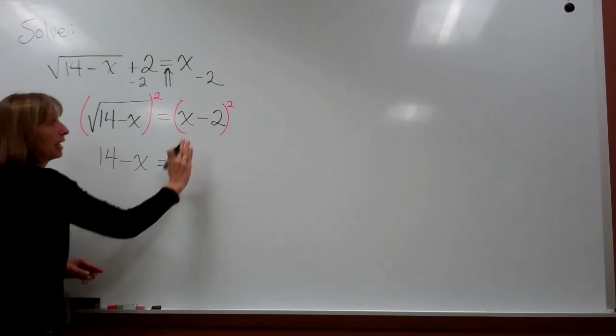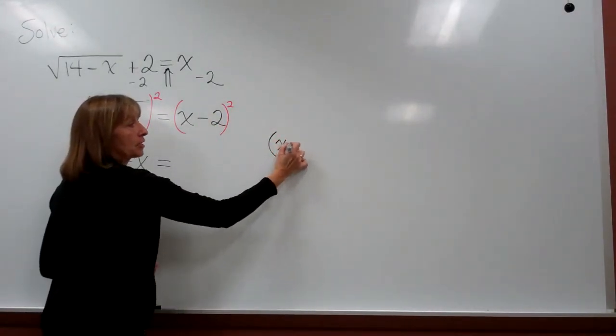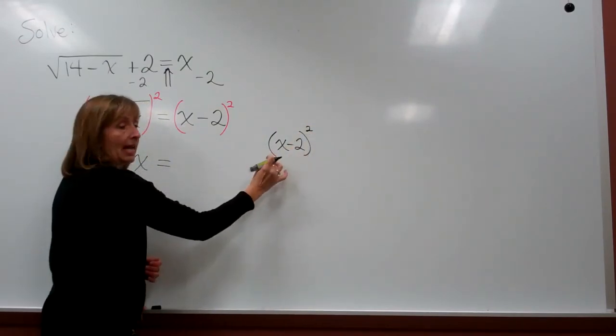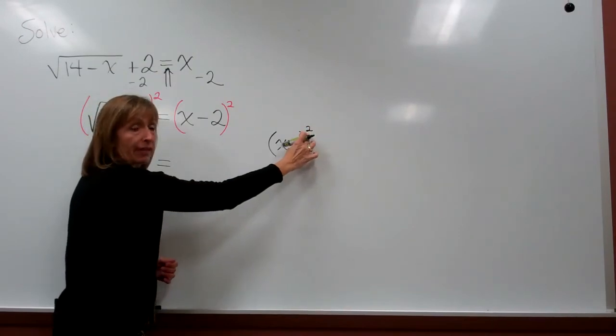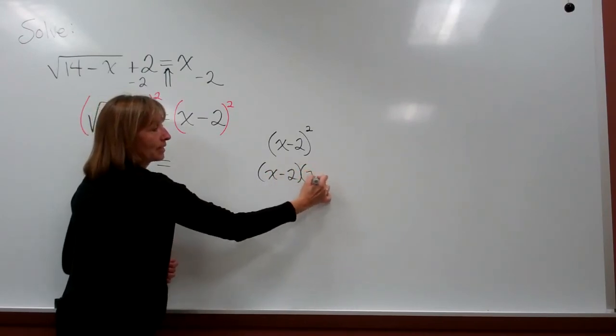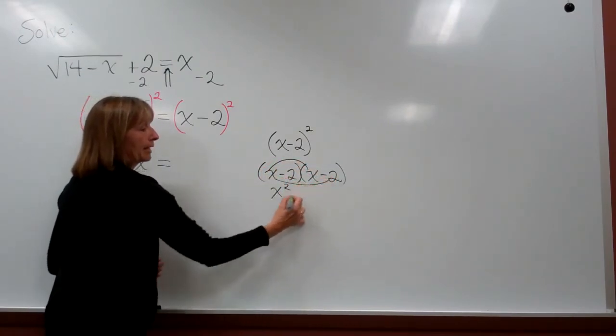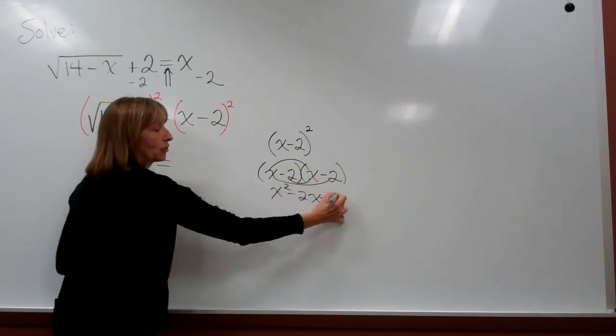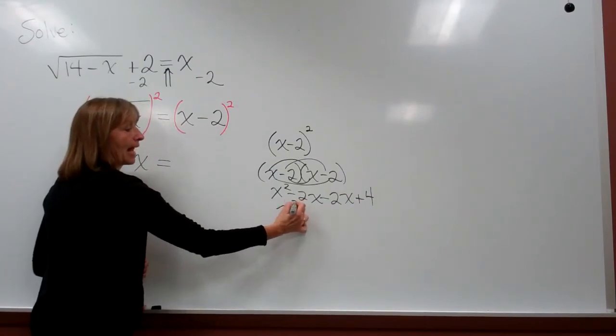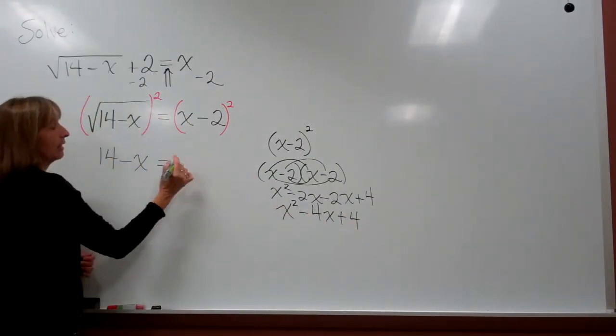On the right side, you have to be careful. We have a two-term expression that's being raised to the second power. If you take a two-term expression that's raised to a power, you have to take that two-term base and write as many of them as you have for the power, for how many factors you need, and then foil it out. So here we need x minus 2 times x minus 2, and we have to foil it. So that'll give us x squared minus 2x minus 2x, and then plus 4, which simplifies to x squared minus 4x plus 4.